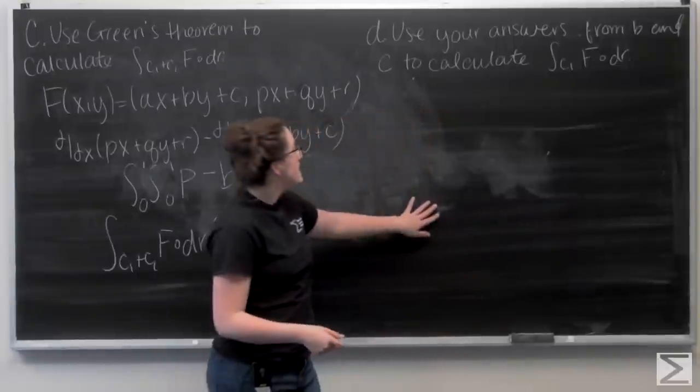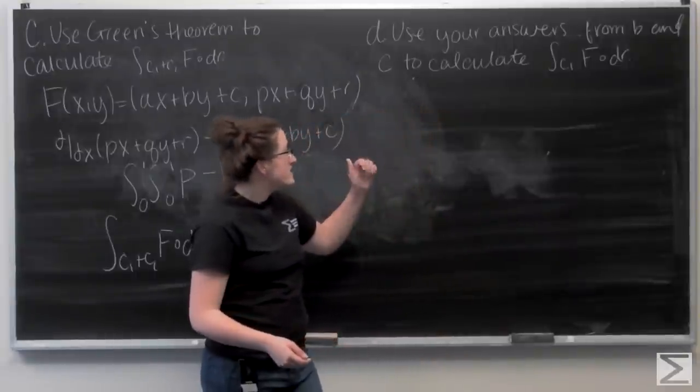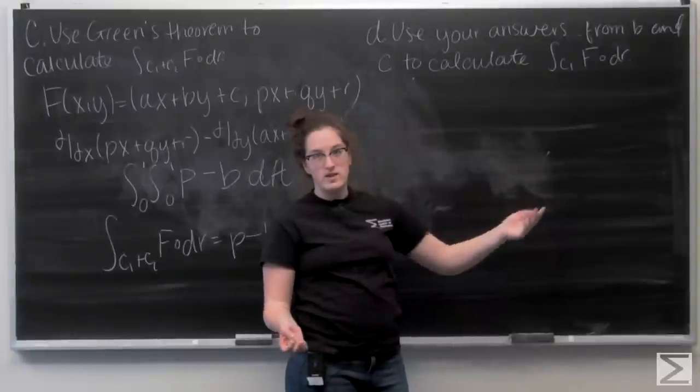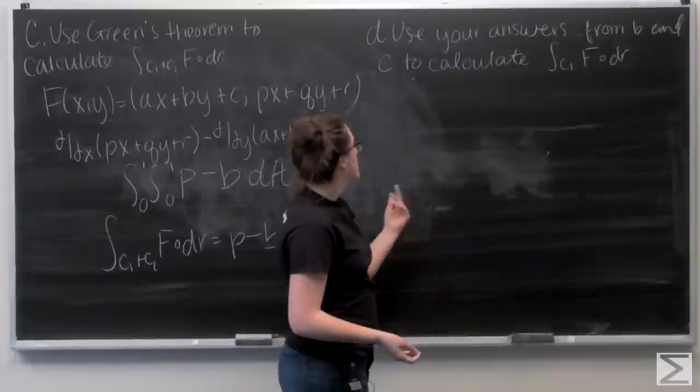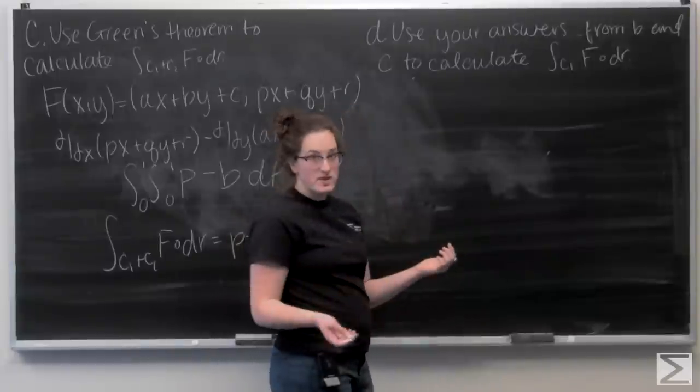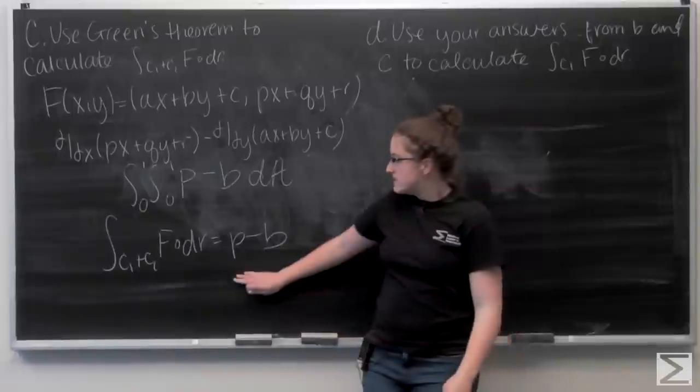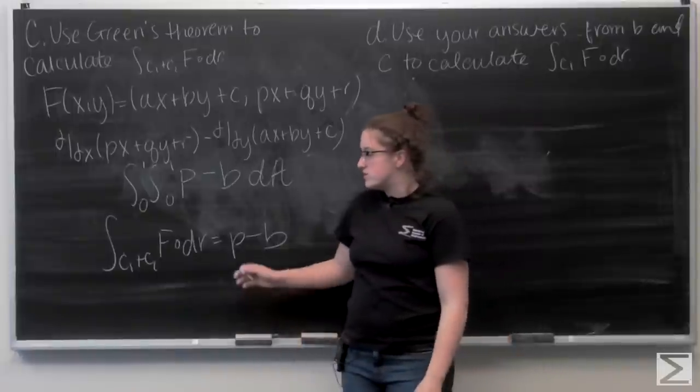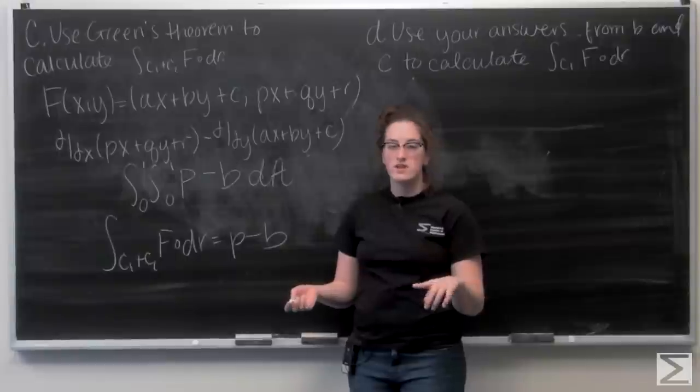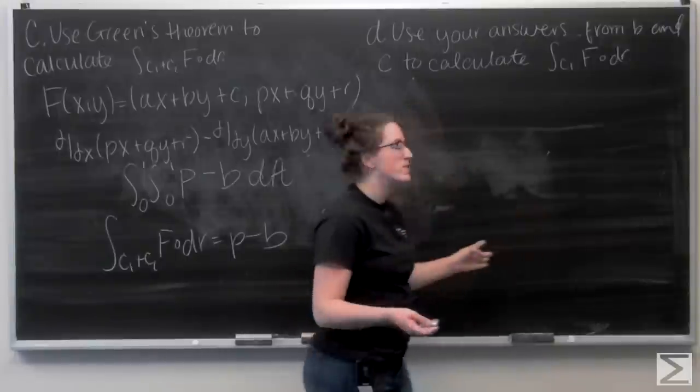Part D asked me to use my answers from B and C to calculate the line integral over c1 of f, which is what we've been trying to get from the beginning. What we found in C is really going to help us out. This answer in C is equal to the line integral of f around c1 plus the line integral of f around c2. Let me go ahead and write it out.